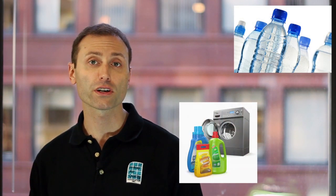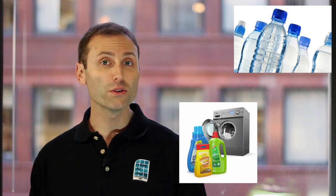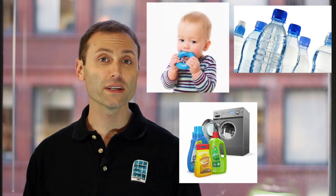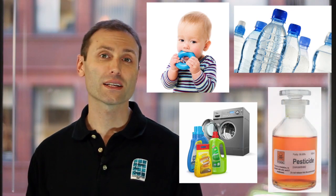According to the National Institutes of Health, endocrine disruptors may be found in many everyday products including plastic bottles, metal food cans, detergents, flame retardants, food, toys, cosmetics and pesticides.